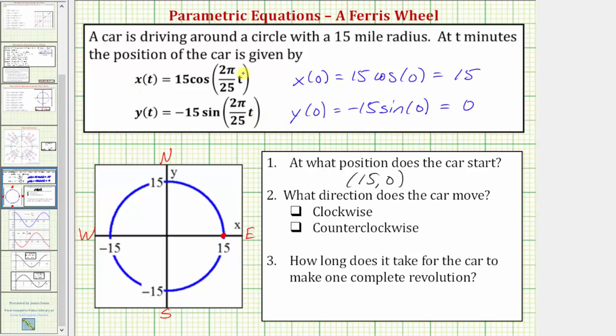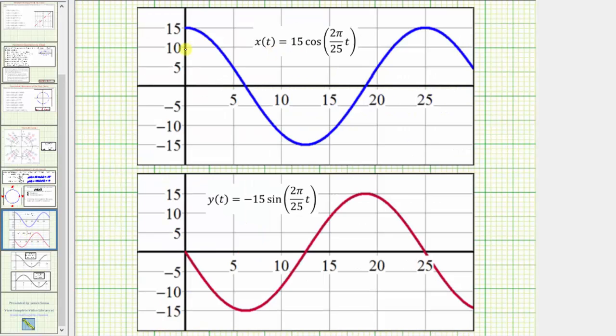Let's actually take a look at the graph of x of t and y of t separately. Remember, the x values control the direction east and west and the y values control the direction north and south. This graph should look familiar where we have an amplitude of 15 and two pi divided by 25 changes the period of our cosine function.